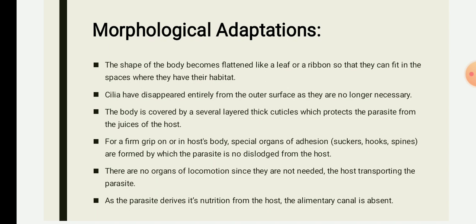The first morphological adaptation concerns shape. The shape of the body of the parasite becomes flattened like a leaf or ribbon, so that they can fit in the spaces where they have their habitat. The body is designed in such a way that they are able to fit into the desirable place or space in the body of the host — where the parasite will make its habitat, where food is available, and where they can multiply. For example, in the digestive system or respiratory system, where they can derive the nutrients and energy required to survive.